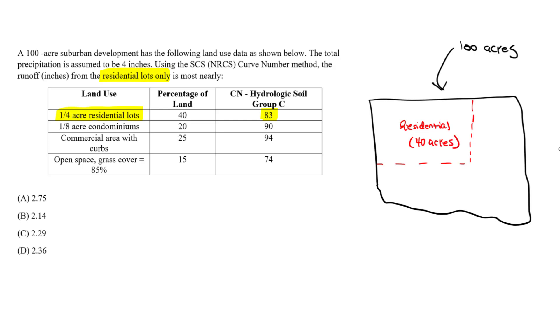So we know that, and about 20% if we look at this number is going to be for the condominiums. So let's say this is for the condominiums, then you have 25% for the commercial area. So let's say this is the commercial area, this is condominiums.